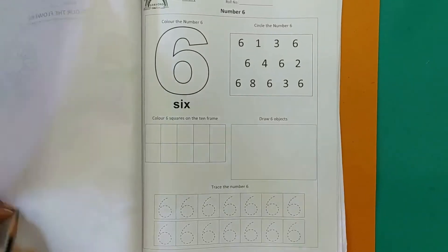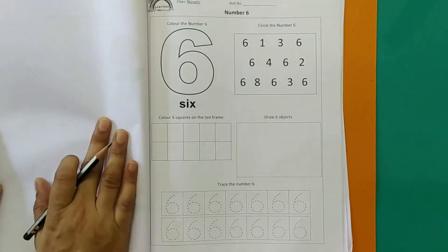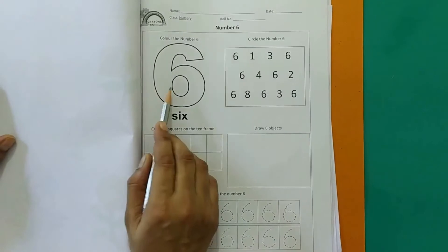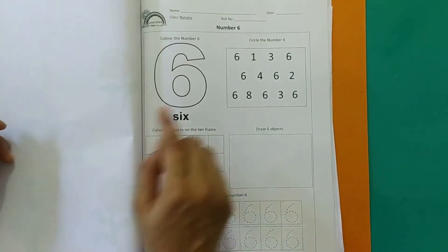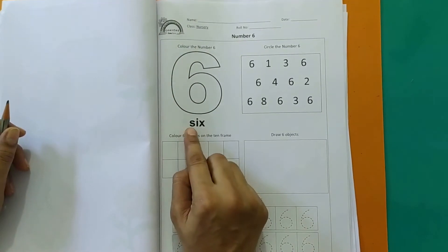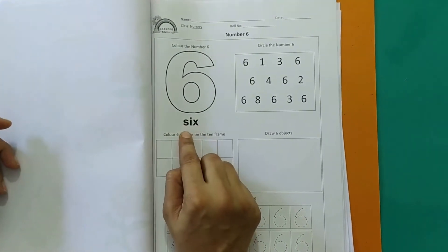Good morning dear children. Let's start with our worksheets for today. So children, our worksheet for today is about number 6. Number 6. This is number 6. S-I-X, six.